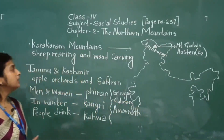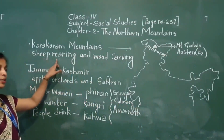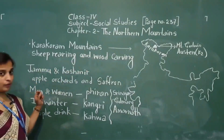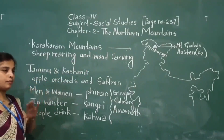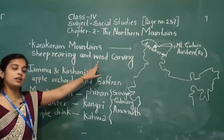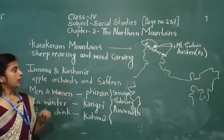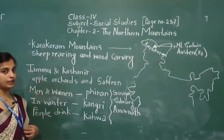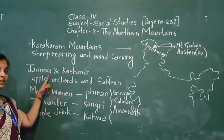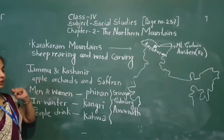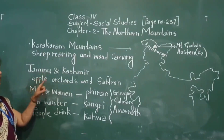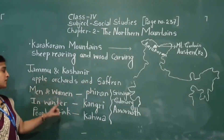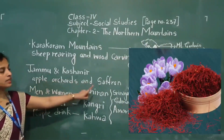But besides terrace farming, some people are engaged in sheep rearing and wood carving. Farming is the main occupation, but some people also engage in sheep rearing and wood carving. Jammu and Kashmir also lies in the Karakoram and Himalaya mountain ranges, and it is famous for apple orchards and saffron.